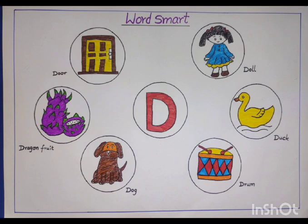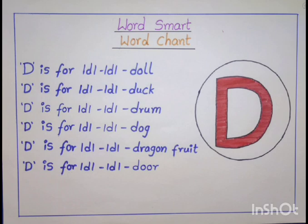D is for Doll. D is for Duck. D is for Drum. D is for Dog. D is for Dragon Fruit. D is for Door. Trace the letter D — D is for Door.